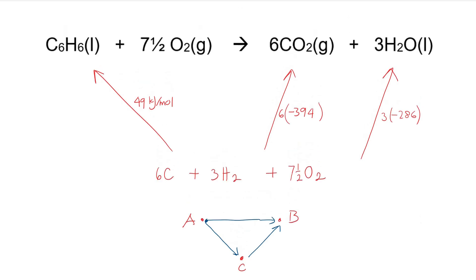We need to reverse this arrow. We are already at this point, the reactant point, but we want to go to the product. So we reverse the arrow, go that way. If we reverse the arrow, we also reverse the sign.